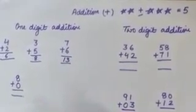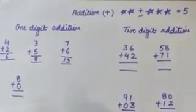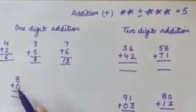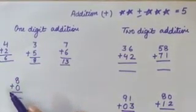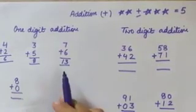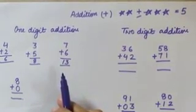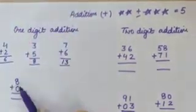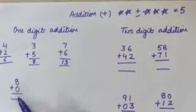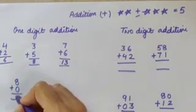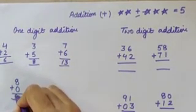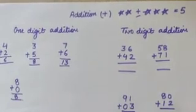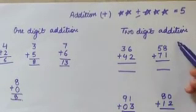Have you got it? Do you remember what you were taught in the previous class? Next is 8 plus 0. Whenever we add 0, that means 0 is nothing, so the same number comes in the answer. So 8 plus 0 is 8. Very good.